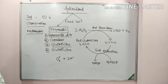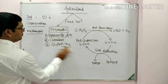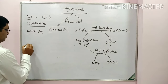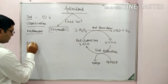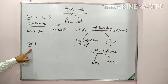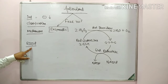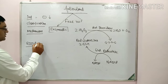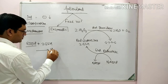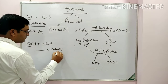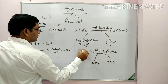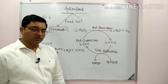Glutathione peroxidase also has a role in lipid peroxidation. The hydroperoxide radical of PUFA — the lipid hydroperoxide radical — combines with reduced glutathione to form a hydroxy fatty acid plus water plus oxidized glutathione. So it has a role in lipid peroxidation as well.